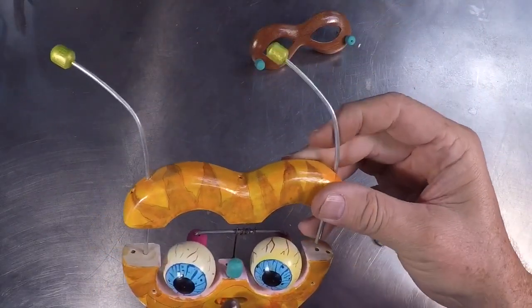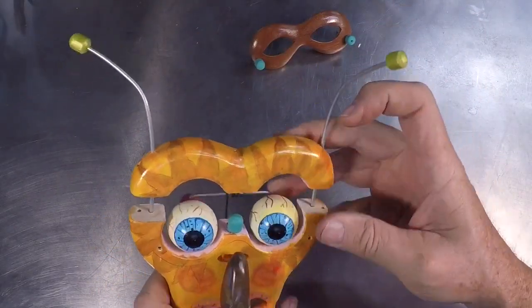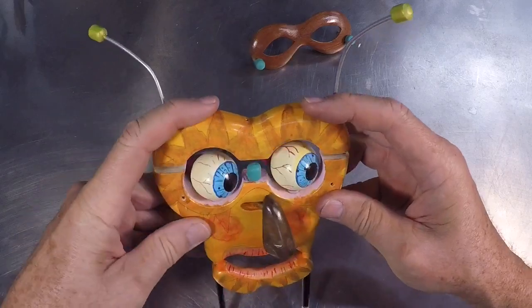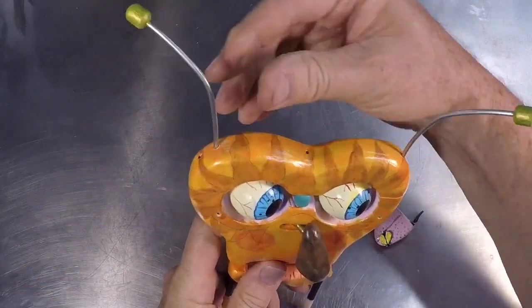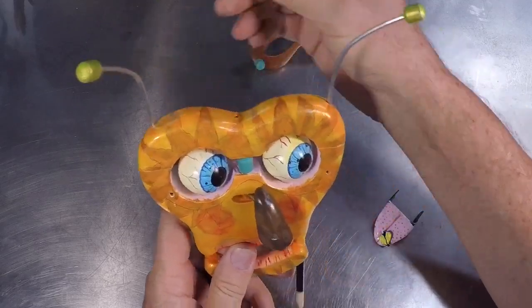The little antenna things actually have a double purpose - they hold the top part of the head down like that. And so I can kind of push them in there, and it kind of locks the whole thing together.